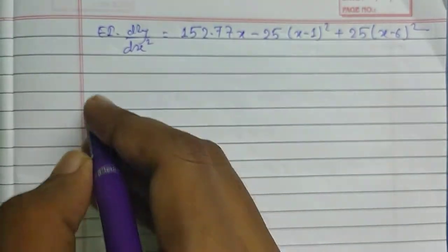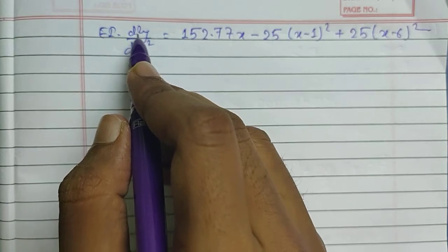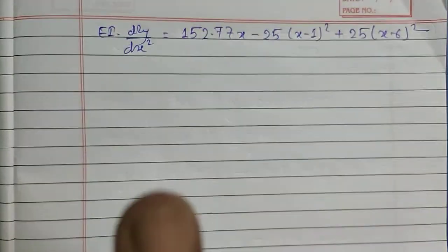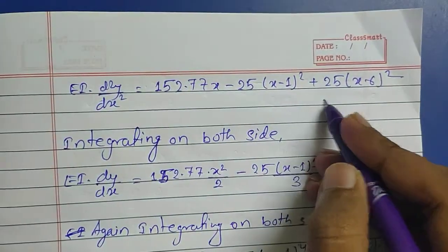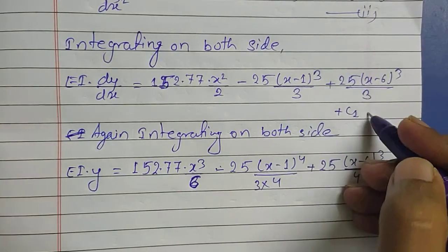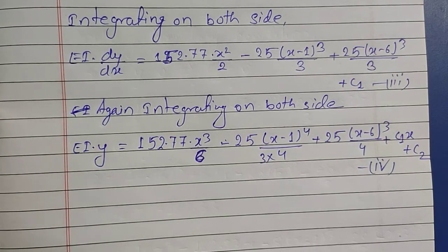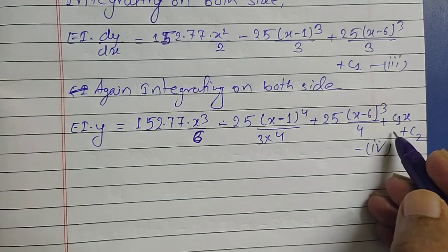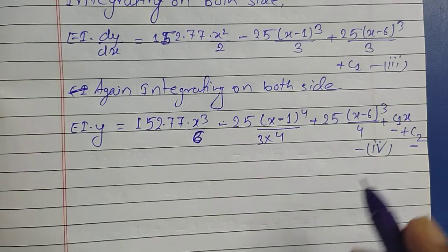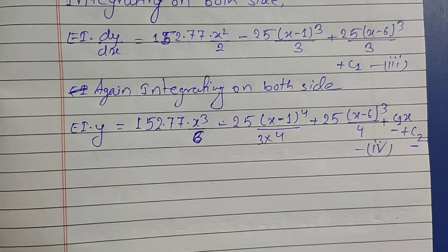On integrating, we use the formula: the integral of xⁿ = xⁿ⁺¹/(n+1). Integrating twice yields two equations with integration constants C1 and C2. To find C1 and C2 we apply boundary conditions: at x = 0, y = 0, and at x = 9, y = 0.